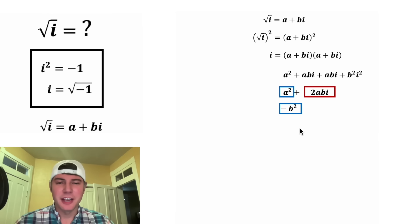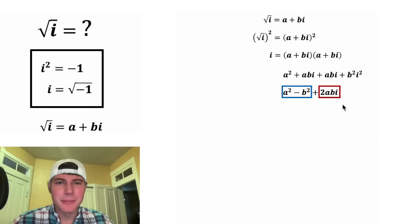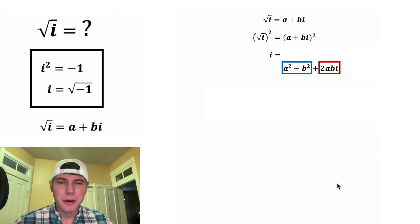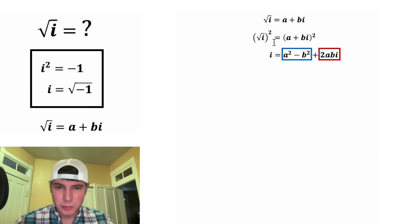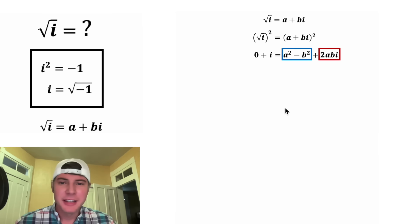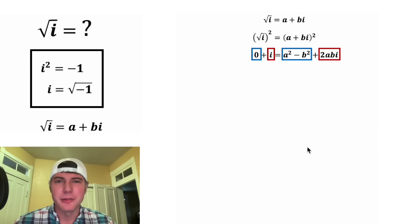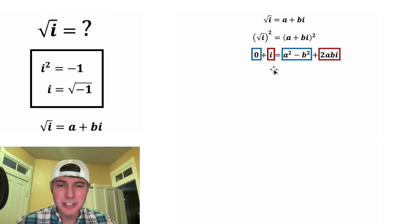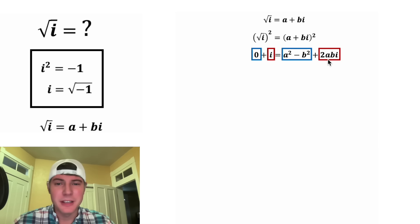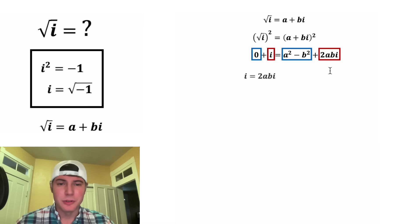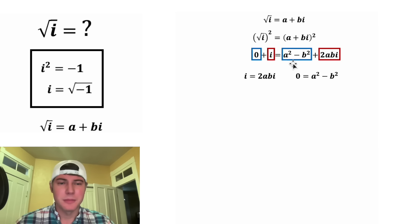Let's bring the two real parts together and rewrite it with the real portion and the imaginary portion. On the left-hand side, we have one i for the imaginary portion and nothing for the real portion. In order for this to be true, the imaginary parts would have to be equal and the real parts would have to be equal. So this i would have to equal 2abi, and 0 would have to equal a squared minus b squared.